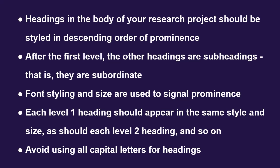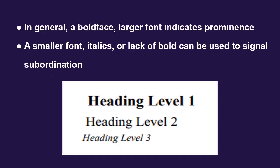Headings in the body of your research project should be styled in descending order of prominence. After the first level, the other headings are subheadings — that is, they are subordinate. Font styling and size are used to signal prominence. Each level-one heading should appear in the same style and size, as should each level-two heading, and so on. Avoid using all capital letters for headings. In general, a bold, larger font indicates prominence; a smaller font, italics, or lack of bold can be used to signal subordination.